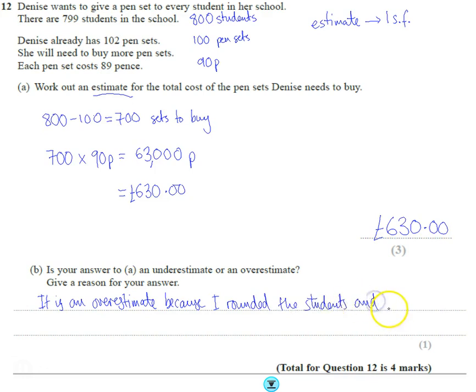And I also rounded the price up. So it really cost 89p, not 90. And I suppose you could also say that I pretended she had less sets than she really had. So I pretended there were more students, but actually we didn't need 700 sets, really less. So that's why.